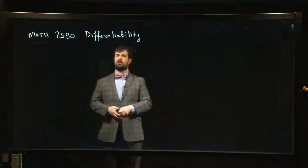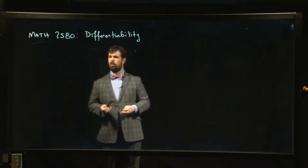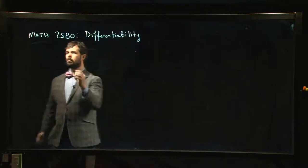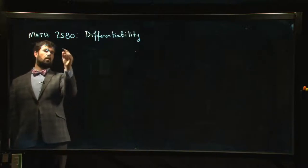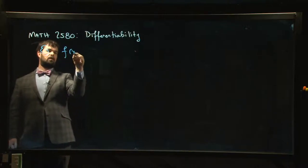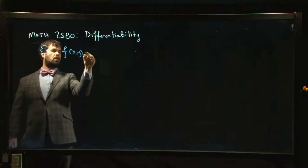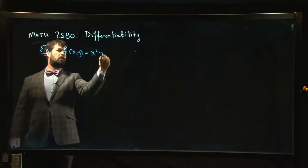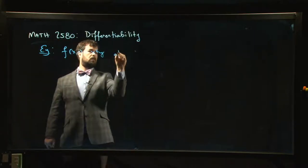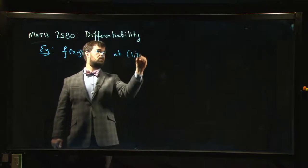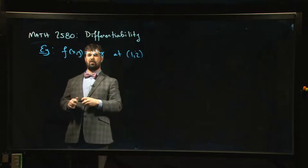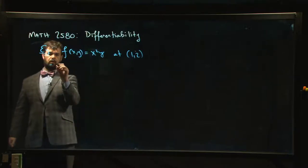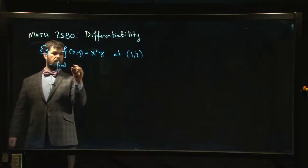Alright, one more video on differentiability. In this one, I'm just going to do a quick example. We're going to take a function f(x,y), let's do x squared times y at the point (1,2), and we're going to try to do two things with it.